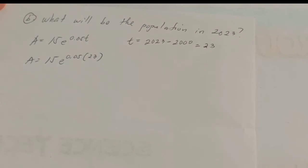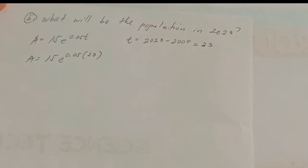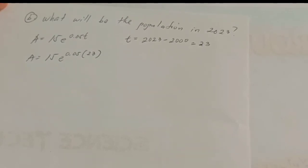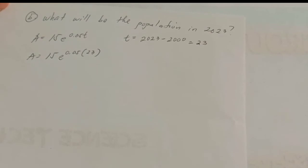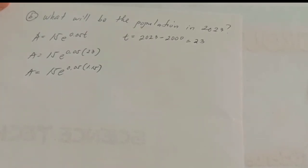15e raised to 0.05 times 23. Multiply 0.05 times 23. The power of e would be, using the calculator to make it easier, the answer would be 1.15.